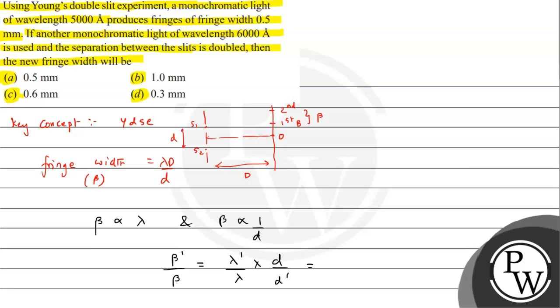Here we can see lambda dash upon lambda, which means this will be 6000 upon 5000 times d. How much was it before? We have doubled it basically. So if it was d, then it will be twice of d. So this will cancel.